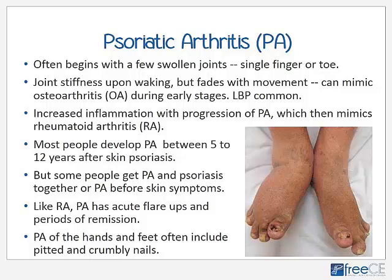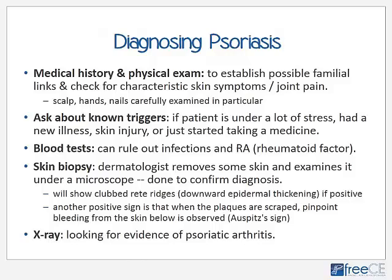Most people develop PA between 5 to 10 years after developing the initial skin symptoms of psoriasis; however, some people get PA and psoriasis together, or develop the arthritis before the skin lesions. Like rheumatoid arthritis, PA has acute flare-ups and periods of remission, and PA of the hands and feet often includes pitted and crumbly nails that can mimic fungal infections or severe mineral deficiencies.